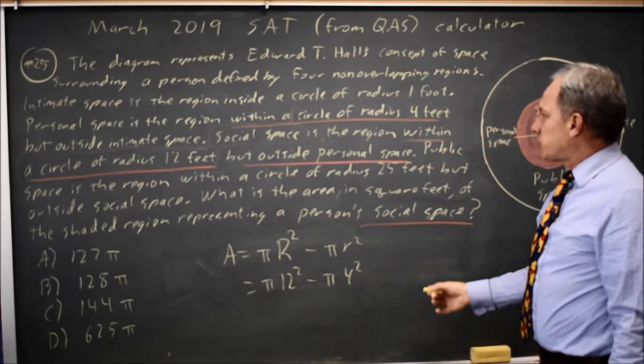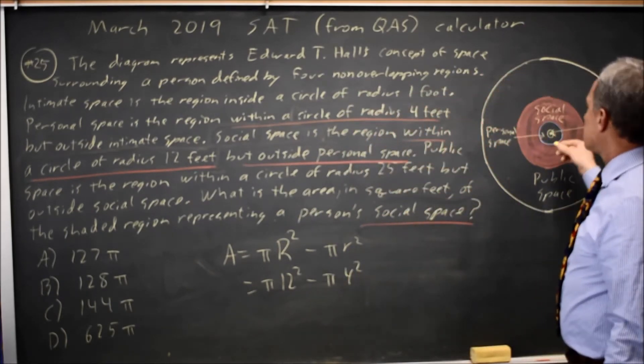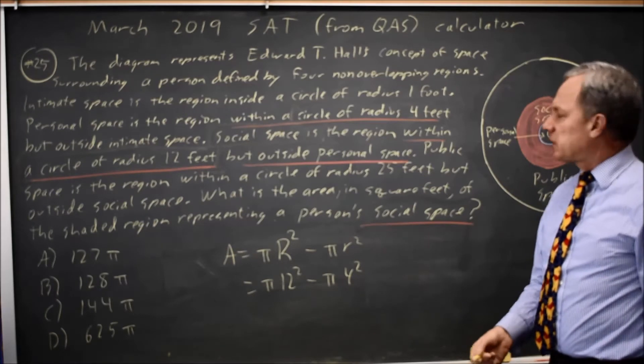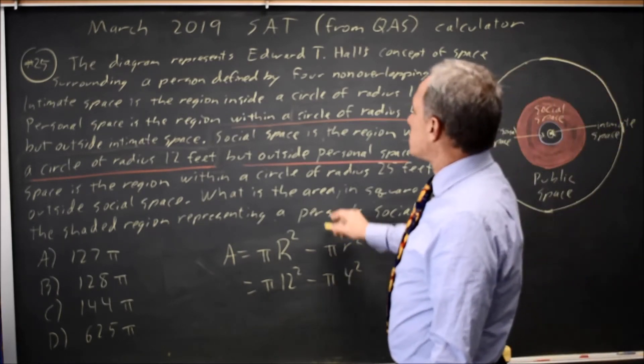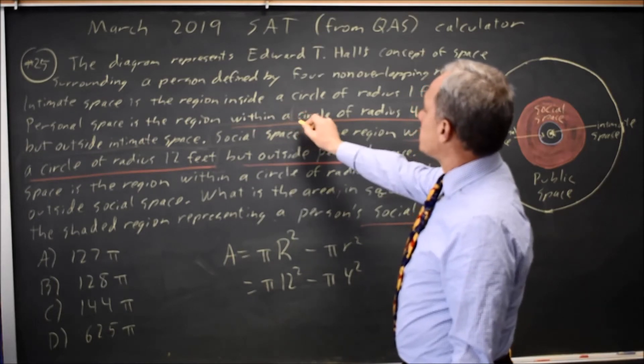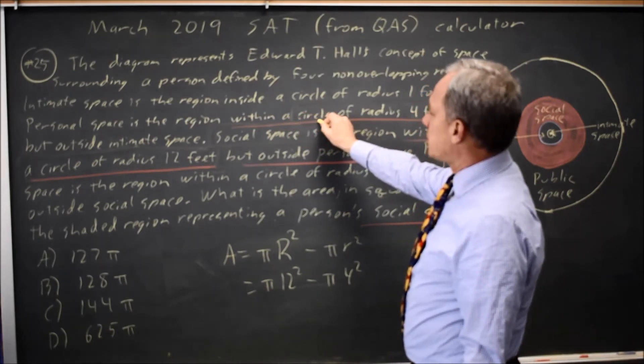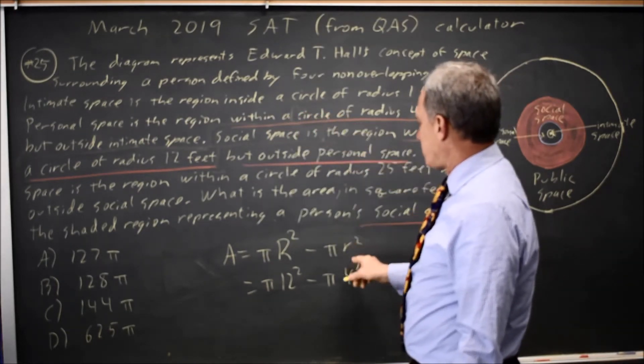If you also subtract intimate space, that would take away another pi, but if you're going to do that, keep in mind outside personal space. If I'm subtracting just the area of personal space, I don't subtract pi times 4 squared.